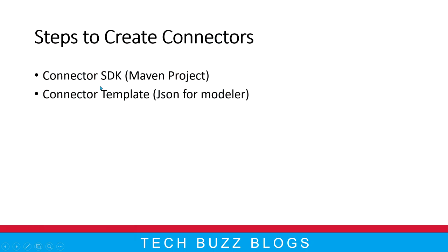Step one is the Connector SDK. The Connector SDK is simply a Maven project where you put your business logic and write your Java code. For example, if my connector needs to interact with a different system — at runtime, getting some URL, hitting that URL, and consuming the response — you can simply put a REST template in your Java code using what Camunda provides in the Connector SDK. You publish and run your code, and people can simply pass the URL at runtime; this logic will execute in the backend automatically.